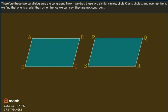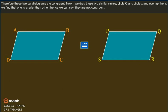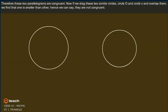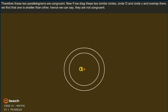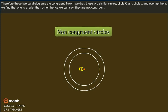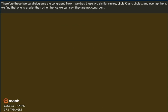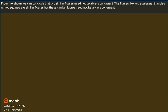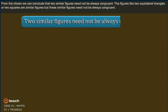Therefore, these two parallelograms are congruent. Now, if we drag the two similar circles — circle O and circle X — and overlap them, we find that one is smaller than the other. Hence, we say they are not congruent. From the above examples, we can conclude that two similar figures need not always be congruent.